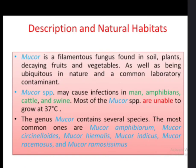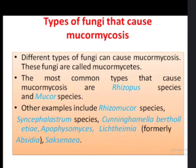Here are the types of fungi that cause mucormycosis. The most common types are Rhizopus species and Mucor species. Other examples include Rhizomucor species, Cunninghamella, Syncephalis, and so on.